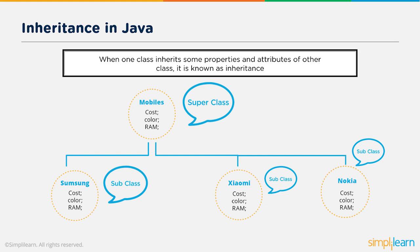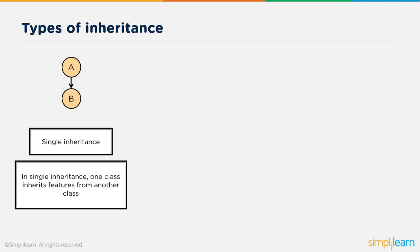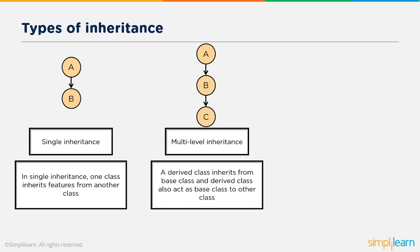Now let's see the types of inheritance in Java. First we have single inheritance. In single inheritance, one class inherits features from another class. As you can see, class B inherits all properties of class A. This is a simple concept of inheritance.